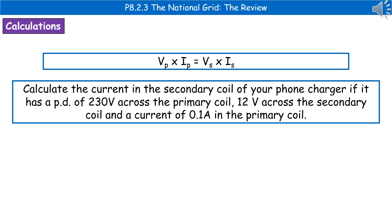You could be asked to carry out a calculation using this equation from the physics data sheet: the potential difference across the primary coil times the current in the primary coil equals the potential difference across the secondary coil times the current in the secondary coil. (V₁I₁ = V₂I₂)